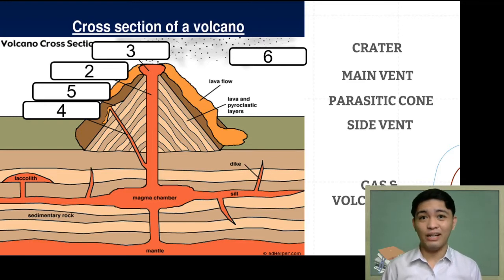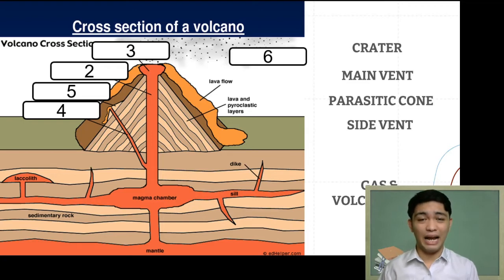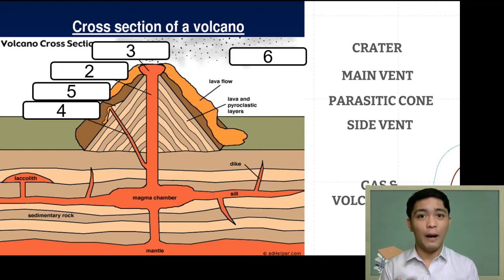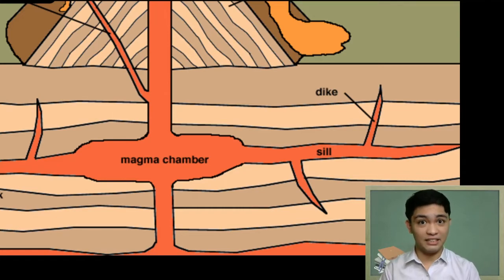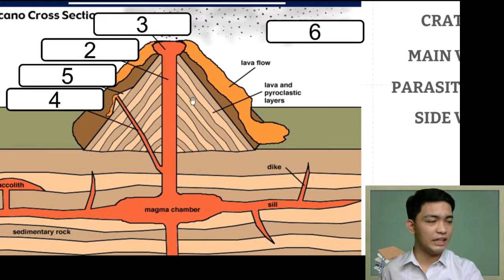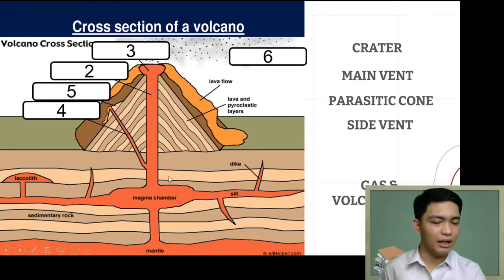Aside from magma, we also encounter the term lava. How are magma and lava different? Both magma and lava refer to molten or liquefied rock. The only difference is that when this molten rock is still inside the volcano, we call it magma, whereas when it has already come out of the volcano, we call it lava. That's why the diagram labels it as a magma chamber — because the molten rock is still within the earth's interior — and what flows outside is called lava flow.